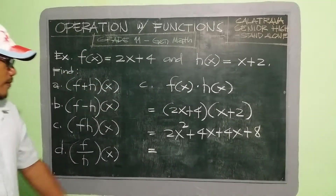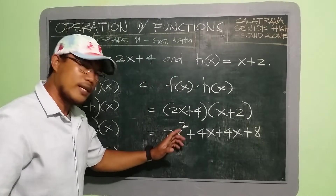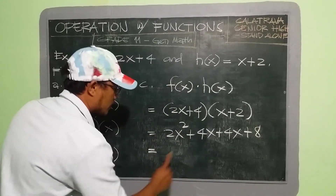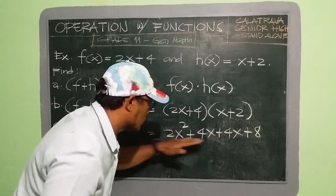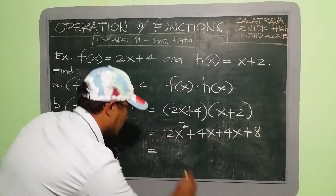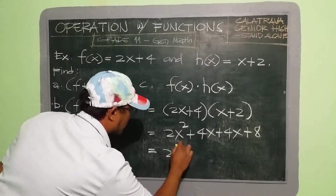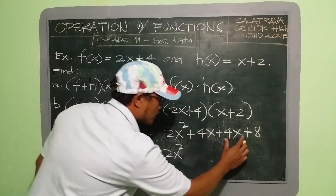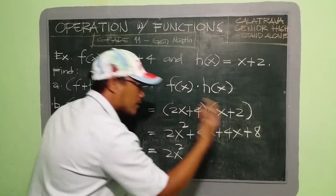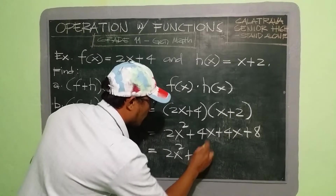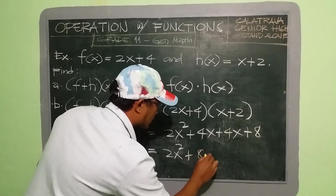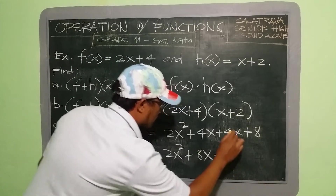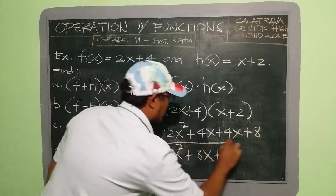Then we simplify. Since there is no other x² term, we bring down 2x². For the x terms, 4x + 4x = 8x. And we have plus 8. So our final answer is 2x² + 8x + 8.